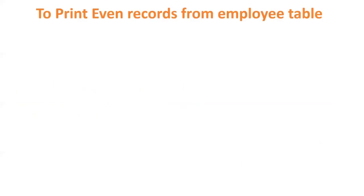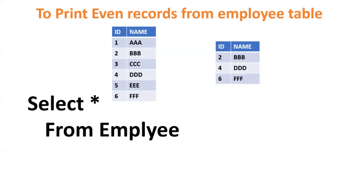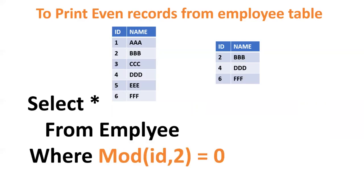Next, from the employee table, we need to print even records — that is records with IDs 2, 4, 6, and so on. It can be achieved using MOD. We do SELECT * FROM employee to get all records, then add a WHERE clause: WHERE MOD(id, 2) = 0. MOD(2,2)=0, MOD(4,2)=0, MOD(6,2)=0, so only even records will be returned.